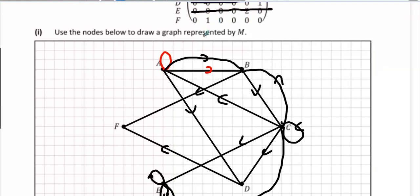And then F only goes to B once. So F, I'm going to draw around the outside. F going to B once.